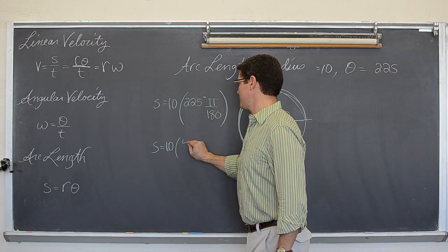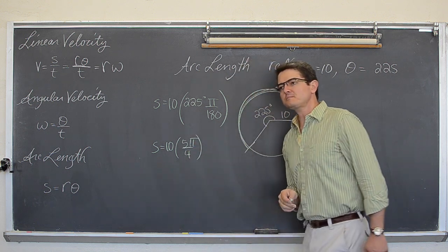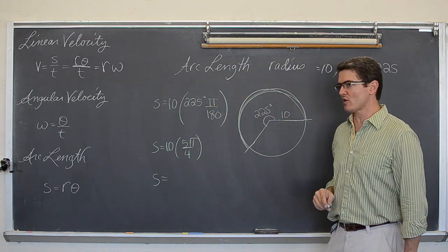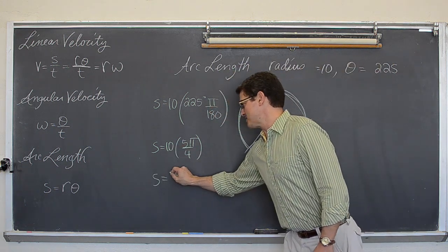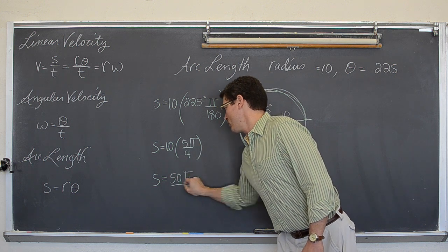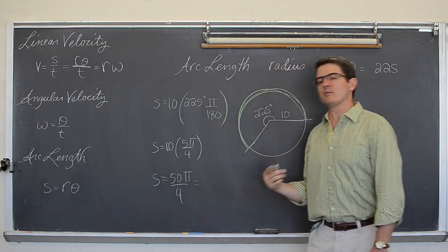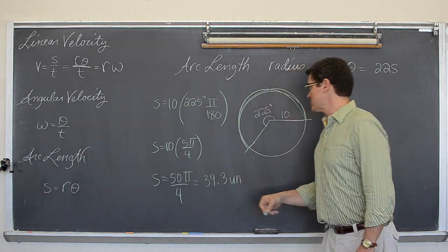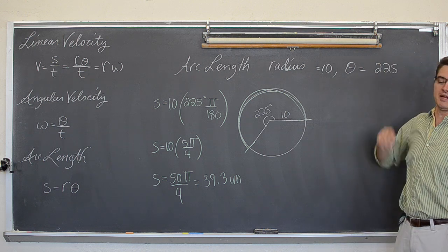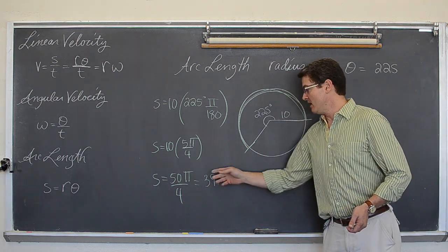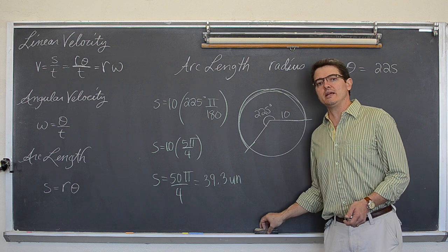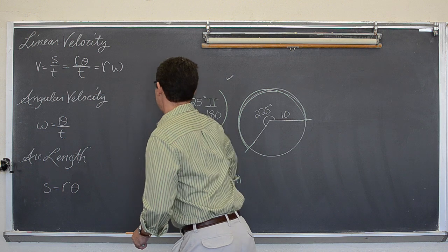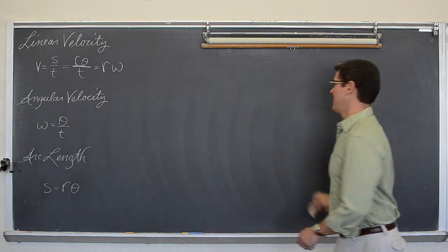So this is going to become S is 10 times 5π over 4 which is going to equal, and I am going to cheat and look over there at my decimal answer, 10 times 5 is 50π over 4. And I know that reduces to 25π over 2 but as a decimal that is 39.3 units. Whatever units I have got in my problem. And I just said 10, so you know 10 inches, 10 feet, 10 miles, whatever. 39.3 units would be the length of that arc. So that is how you find arc length. Just S equals R times θ.